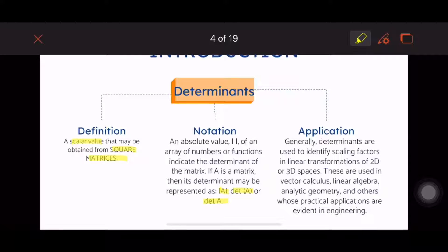Or it can be det of A, or determinant of A in parentheses to mean matrix. For the application, determinants are used to identify scaling factors in linear transformations of 2D and 3D spaces. If you have a 2D space with an x-y axis, and your plane figure is positioned in this x-y axis, and the scaling in the x and y directions are changed, what will be the effect on the area of the figure?